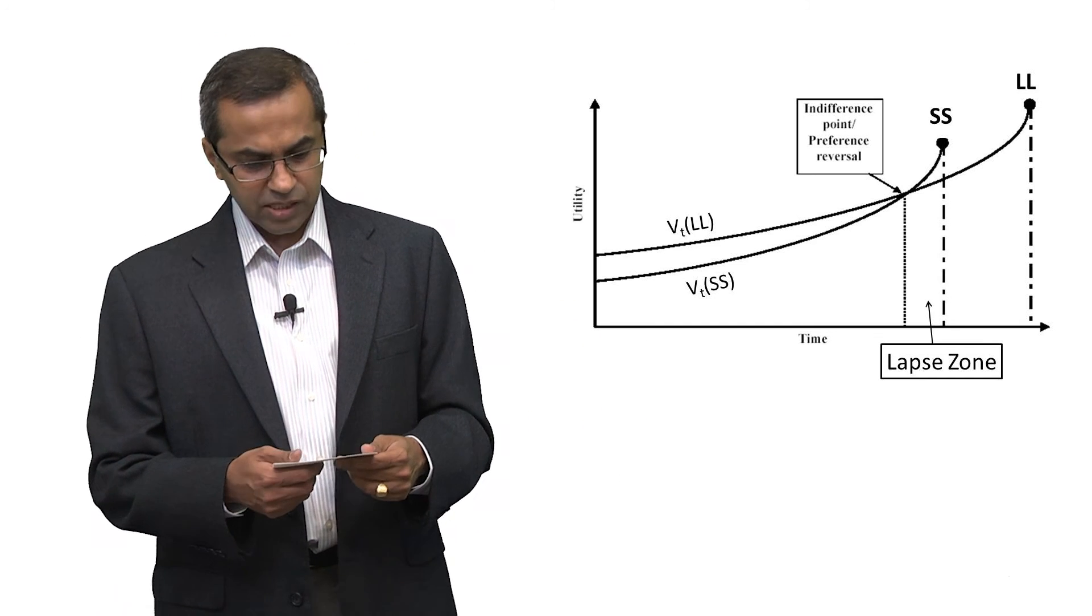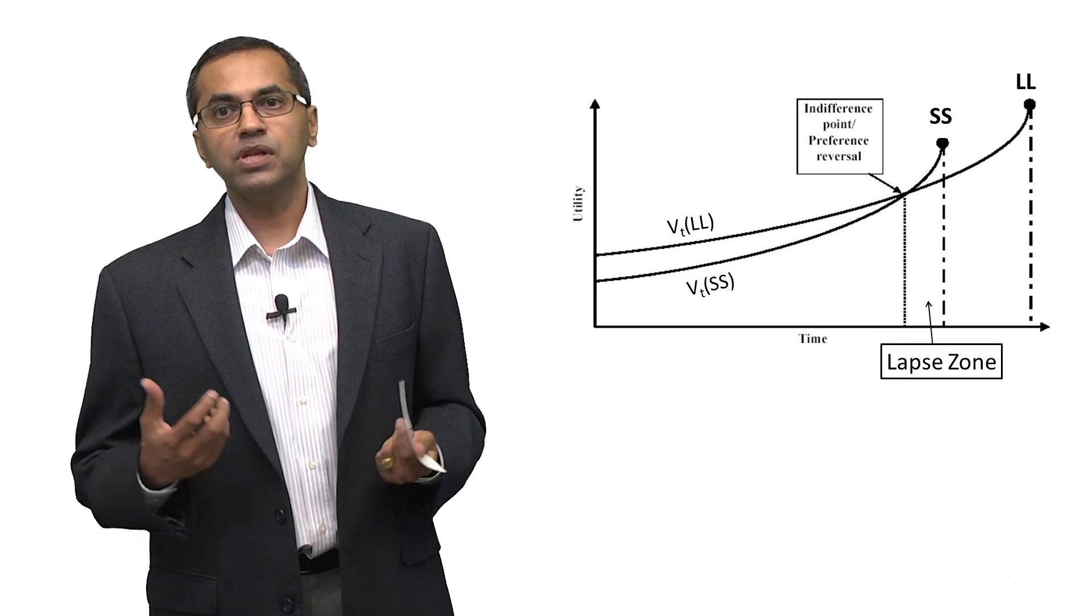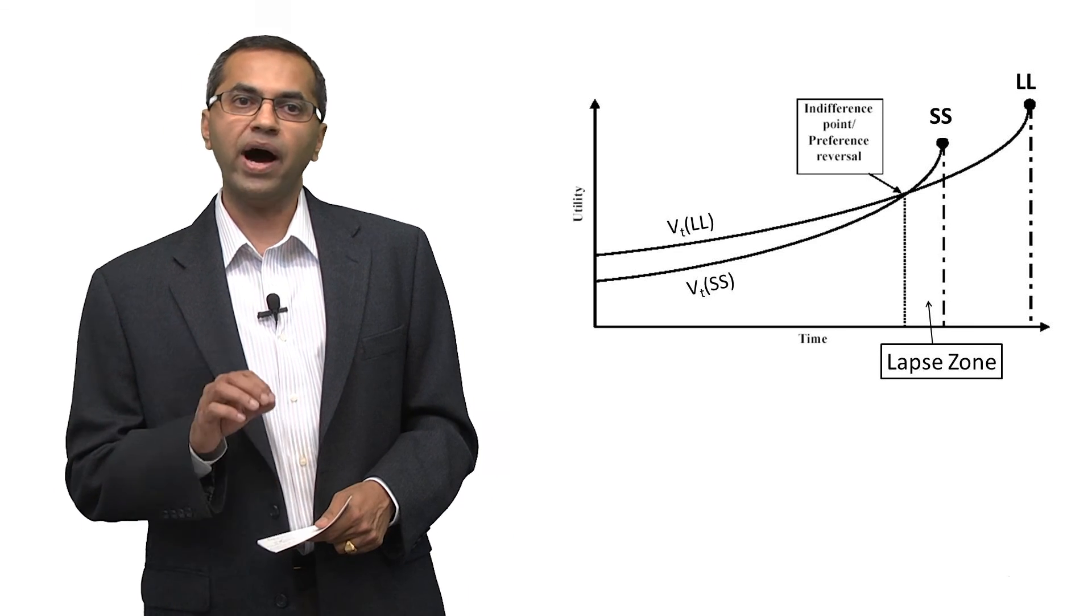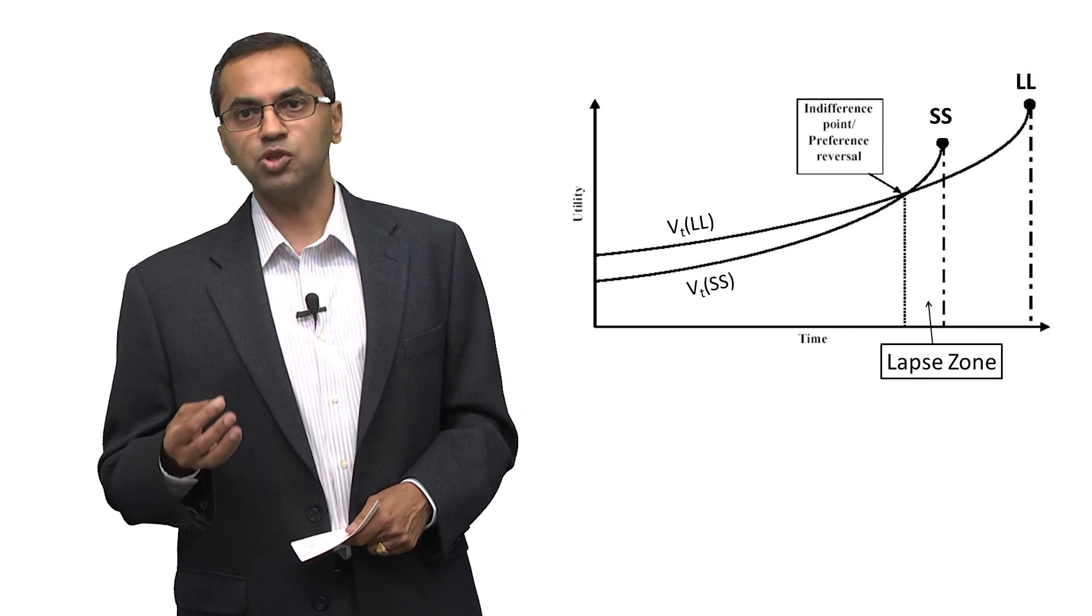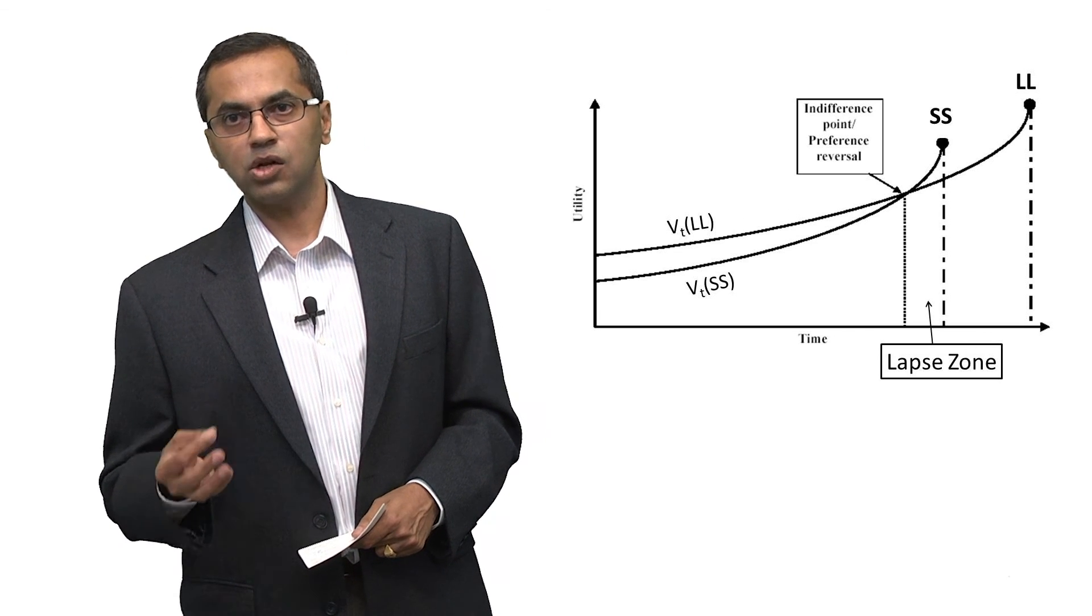So as a result of these three factors, we end up with the notion of inter-temporal choice, with the notion that while people know from a distance that LL is bigger than SS, they end up choosing SS as they get close to it.